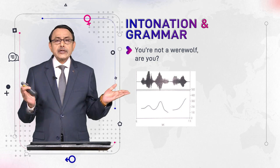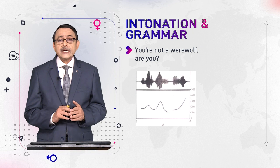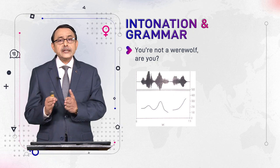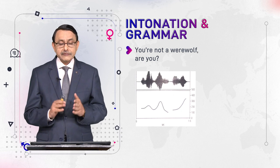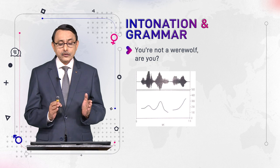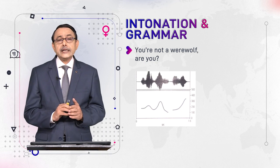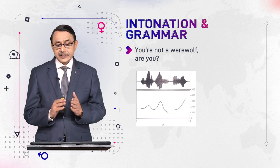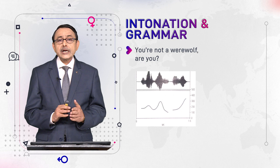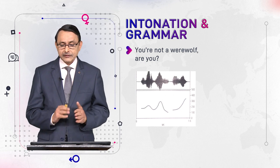'You are a werewolf, aren't you?' — this time the tag question is negative. In the right-side diagram, the first part shows the pitch pattern of the first half of the sentence, and the negative tag is shown separately in the second curve, which shows a falling pitch pattern — a falling tone.